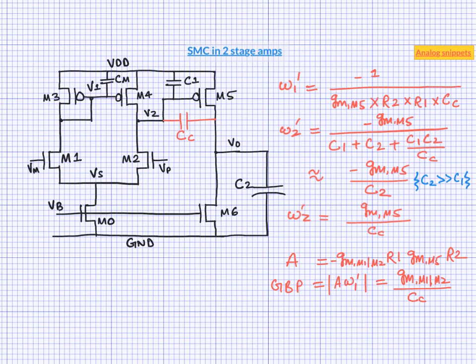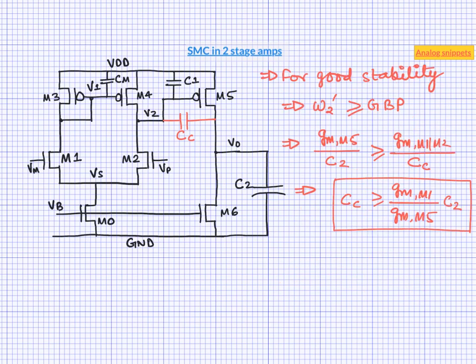So recall that for an adequately stable system, the second pole should be at or beyond gain bandwidth product. So let us start from there. So by working out this condition, we arrive at the lower limit of the compensation capacitor. So this condition says that compensation capacitor should be at least the first stage to second stage gm ratio times the output capacitor. So this means that if we want to minimize the compensation capacitor, then we need to minimize this gm ratio.